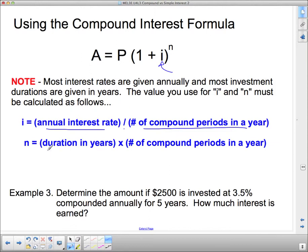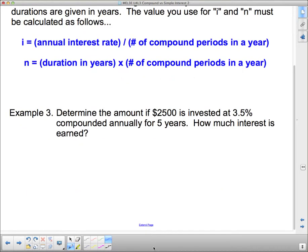So our annual interest rate is going to be divided by the number of compound periods per year. Now, n is the duration in years. Oftentimes, n is going to... sorry, n is the number of compound periods. And oftentimes, you're only going to be given the years, and so you have to multiply by the number of compound periods per year. So you have to be a little bit careful with this one, and we're going to do a few examples to show you how it's done.